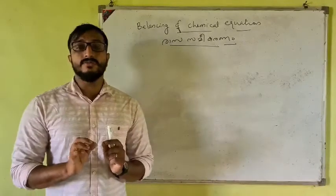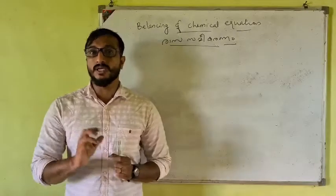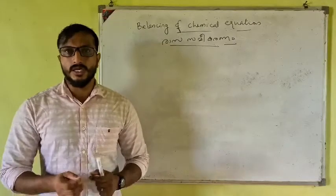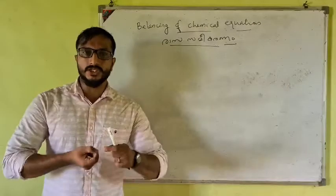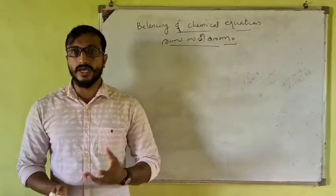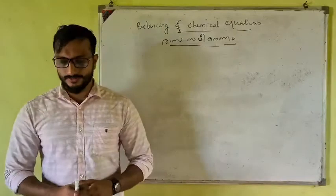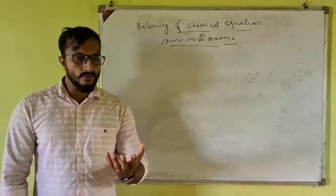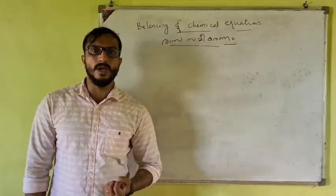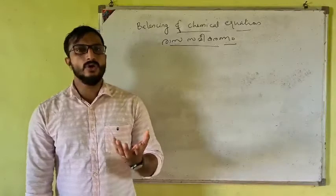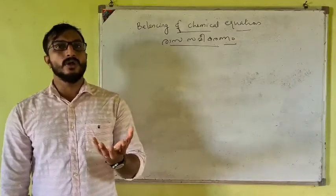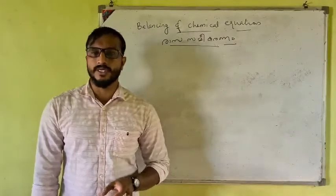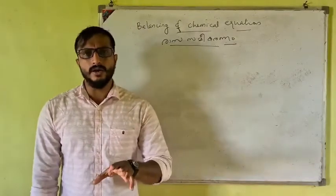Let me check an example: magnesium burning in the air. That is the magnesium piece burning in the air, and it produces a white powder — that is magnesium oxide.